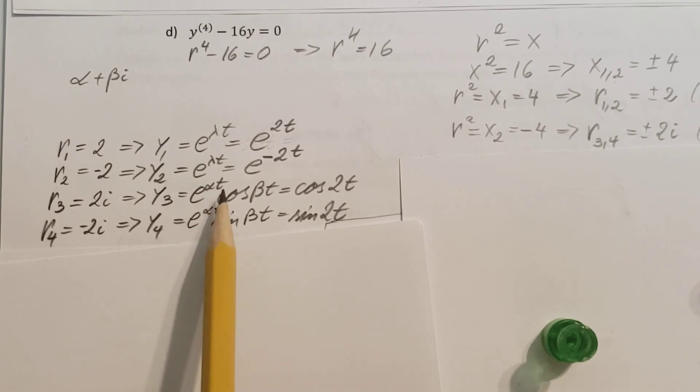So, alpha, again, 0. So, e to the 0 is 1. So, all we have left, sine 2t. There you go. Sine 2t. From that 2.